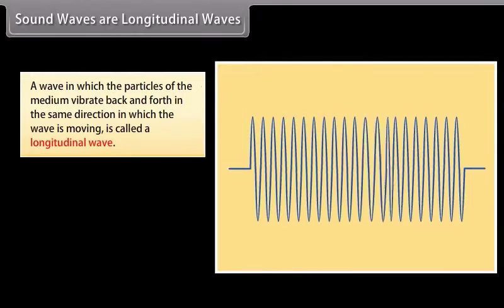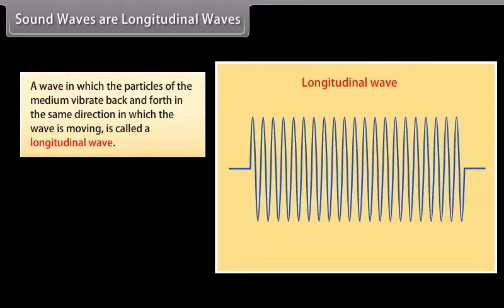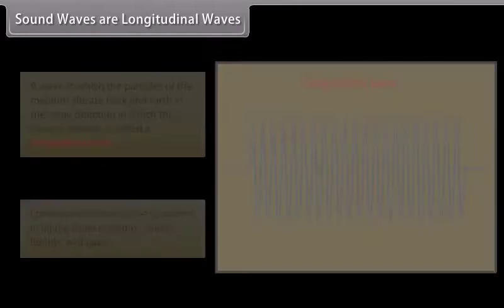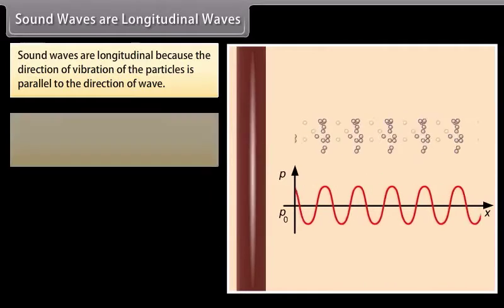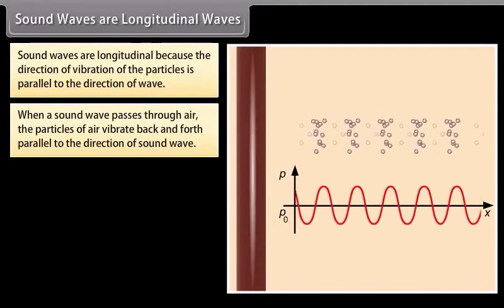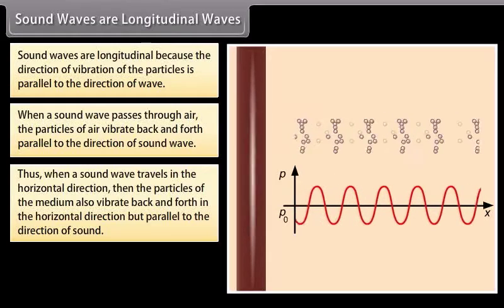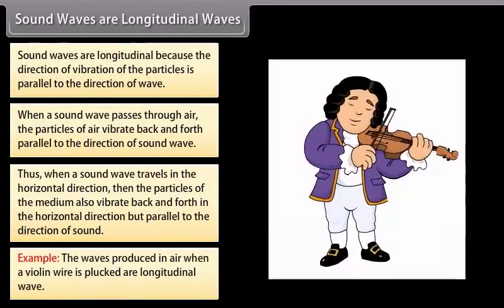Sound waves are longitudinal waves. A wave in which the particles of the medium vibrate back and forth in the same direction in which the wave is moving is called a longitudinal wave. Longitudinal waves can be produced in all the three mediums: solids, liquids, and gases. Sound waves are longitudinal because the direction of vibration of the particles is parallel to the direction of wave. When a sound wave passes through air, the particles of air vibrate back and forth parallel to the direction of sound wave. Thus, when a sound wave travels in the horizontal direction, then the particles of the medium also vibrate back and forth in the horizontal direction, but parallel to the direction of sound. For example, the waves produced in air when a violin wire is plucked are longitudinal waves.